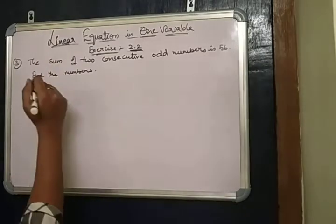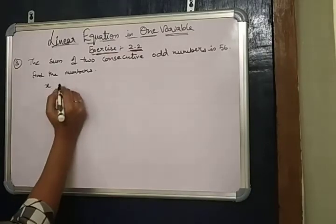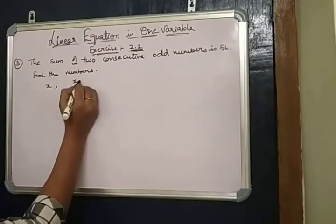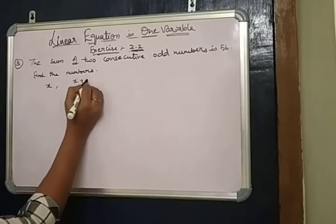Sum of two consecutive odd numbers means one of the number is X and another number is X plus 2.